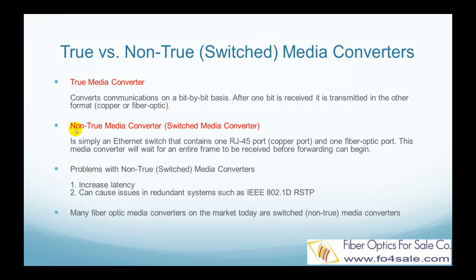A non-true media converter, or switched media converter, is simply an Ethernet switch that contains an RJ45 port and one fiber optic port. This media converter will wait for an entire frame to be received before forwarding can begin. There are a couple of problems with non-true or switched media converters: the first is increased latency, and the other is when using them in redundant systems such as IEEE 802.1d RSTP. Many media converters on the market today are switched media converters.